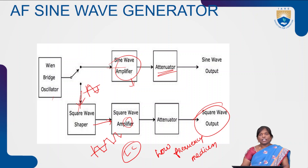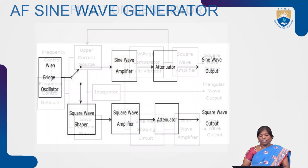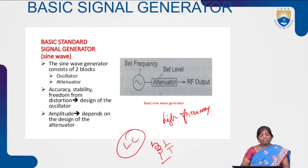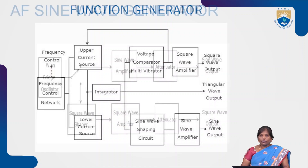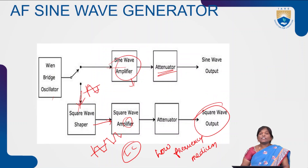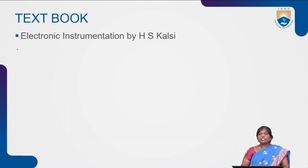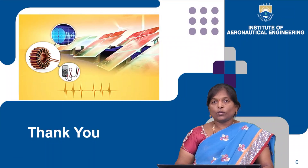In summary, we have three types: first, the sine wave generator; second, the function generator, which generates three different types of signals — sine wave, triangular wave, and square wave; and third, the AF sine and square wave generator, which generates both sine and square waves at low frequency. In the next session, we will discuss the remaining generators. Thank you.